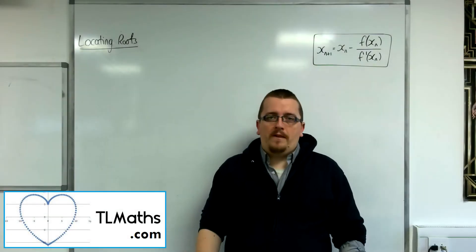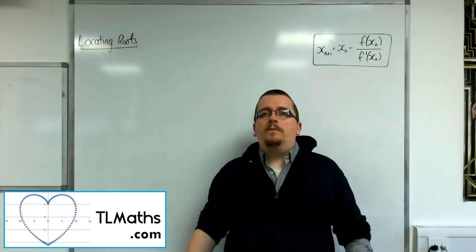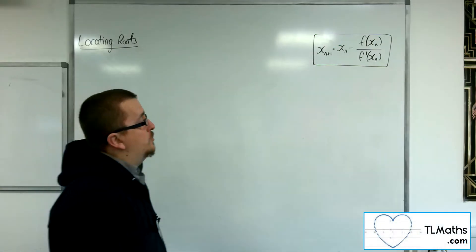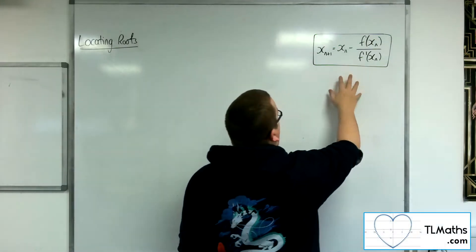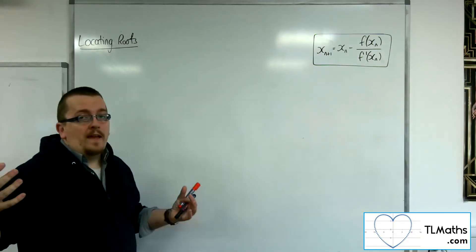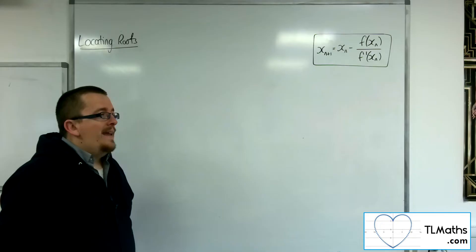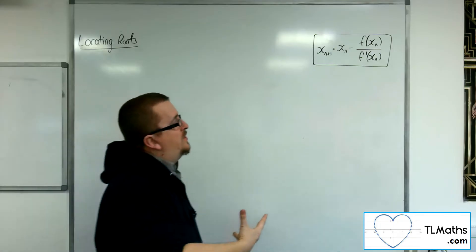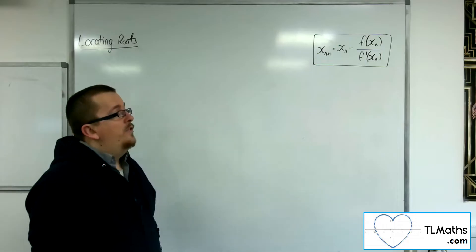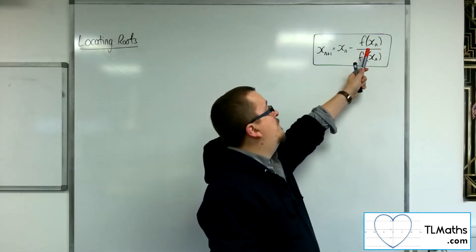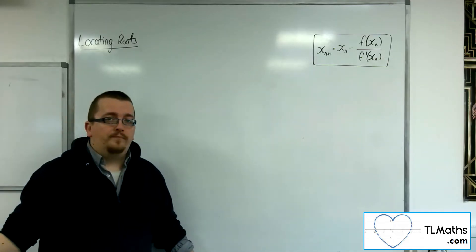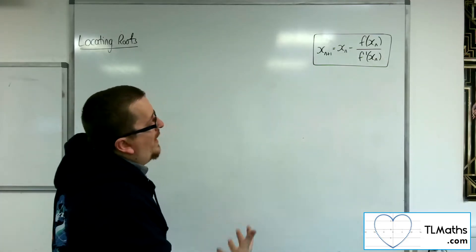So while the Newton-Raphson method is good, it isn't perfect. One thing that can be pointed out directly from the iterative formula itself is that if xn is ever substituted into f prime and you get 0, then you're dividing by 0 in this fraction, which obviously causes a problem. And what does that then identify?